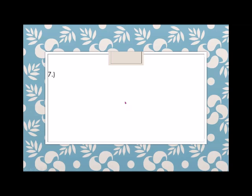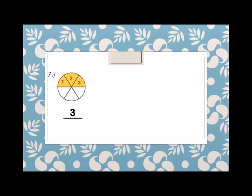Another example: a circle again. How many shaded parts? 1, 2, and 3. Therefore, the numerator is 3. And divided into how many parts? 4, 5, and 6. Therefore, the denominator is 6.